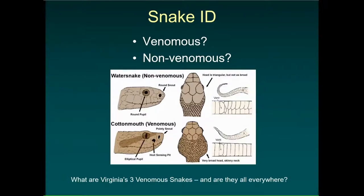For herpetofauna — amphibians and reptiles — you can look at general shape, skin texture, size, and vocalizations. One common question I get is how to tell venomous from non-venomous snakes. There are three venomous snakes in Virginia. As far as telling them apart, you can look at the pupil of the snake: non-venomous snakes in Virginia have round pupils, while venomous snakes have an elliptical or cat-like pupil.